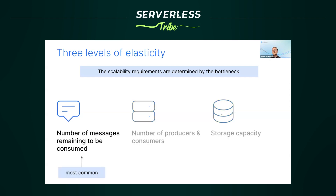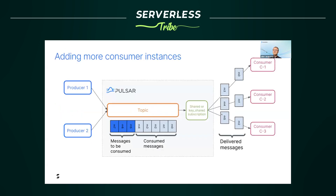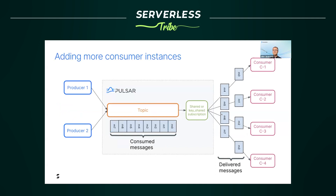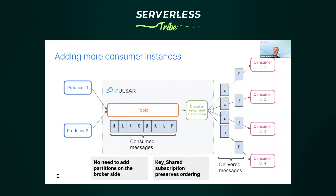The most common bottleneck is the consumer side. If messages grow faster than consumers can process them, with Pulsar you simply add new consumers to the shared or key shared subscription — that's it. With Kafka, adding a new active consumer requires adding a new partition to the topic. With Pulsar, you don't need that to scale out consumers, all while preserving the ordering guarantee — unlike traditional messaging brokers.